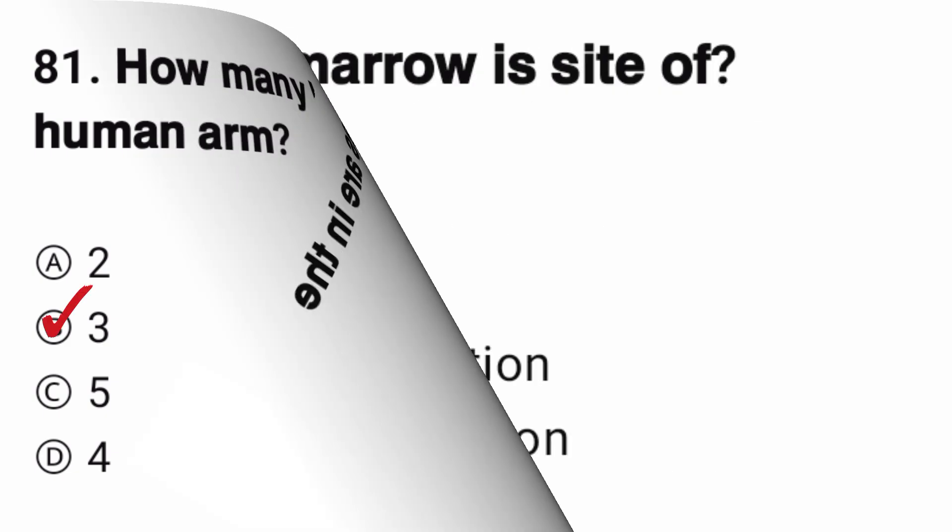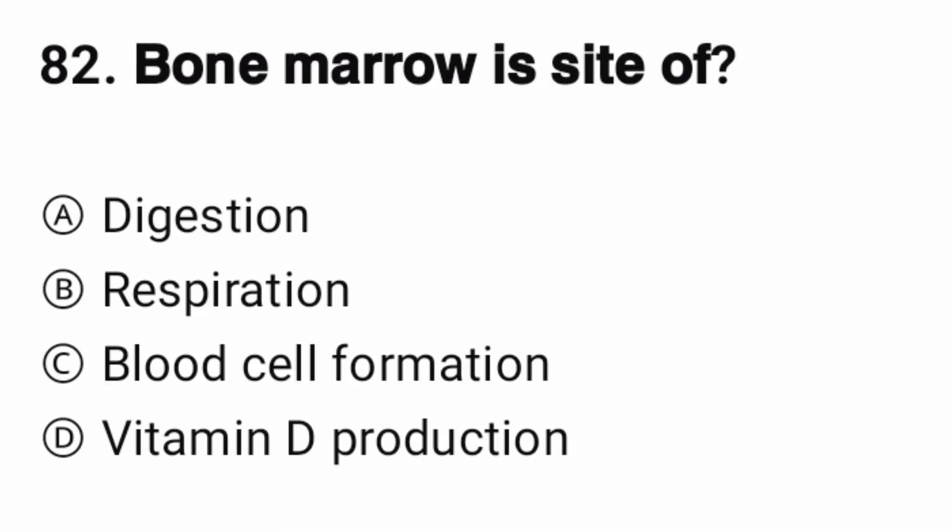Question number 82. Bone marrow is a site of? The correct option is C, blood cell formation.